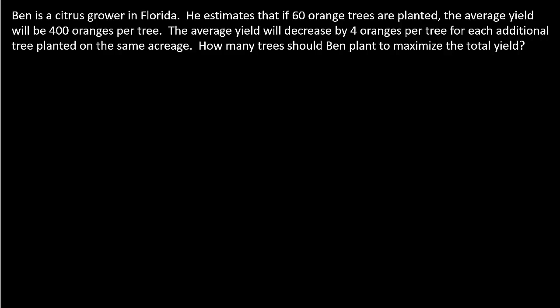Ben is a citrus grower in Florida. He estimates that if 60 orange trees are planted, the average yield will be 400 oranges per tree. The average yield will decrease by 4 oranges per tree for each additional tree planted on the same acreage. How many trees should Ben plant to maximize the total yield?